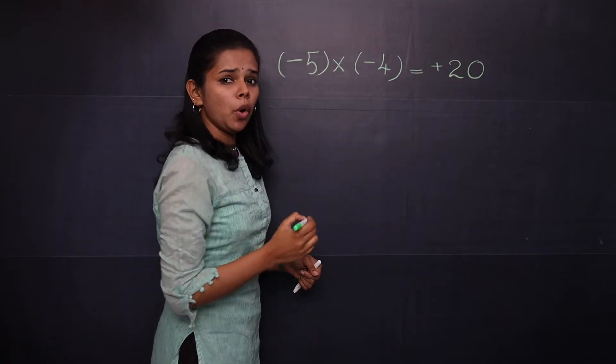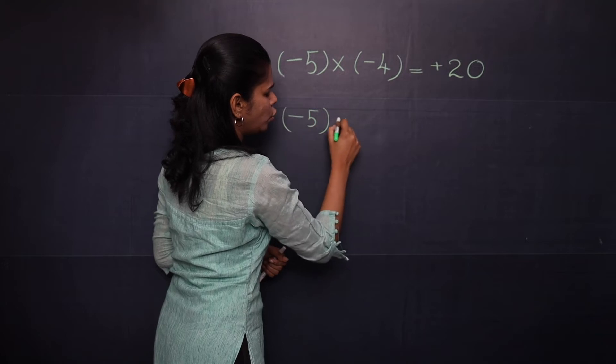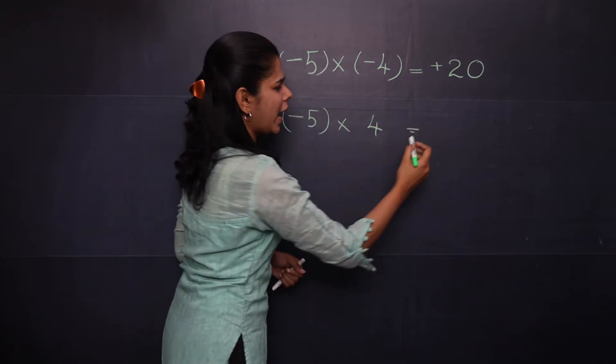Now if you are going to take negative 5 into 4, here you have opposite sign, so your answer will be negative 20.